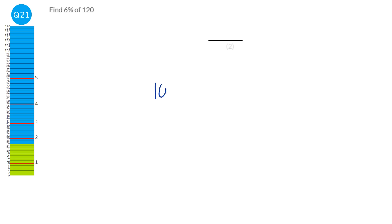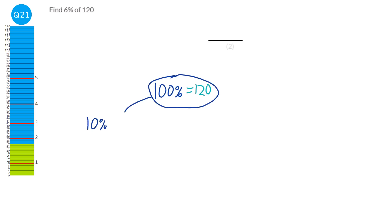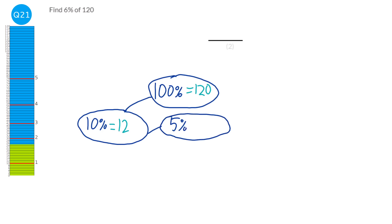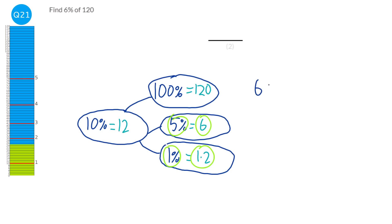We start with 100% of 120, which is 120. We're trying to get to 6%, so we find 10% by dividing by 10 — that gives 12. Then 5% is half of 10%, which is 6. And 1% is the 10% divided by 10, giving 1.2. To get 6% we add the 5% and the 1%: 6 plus 1.2 equals 7.2. So the answer is 7.2.